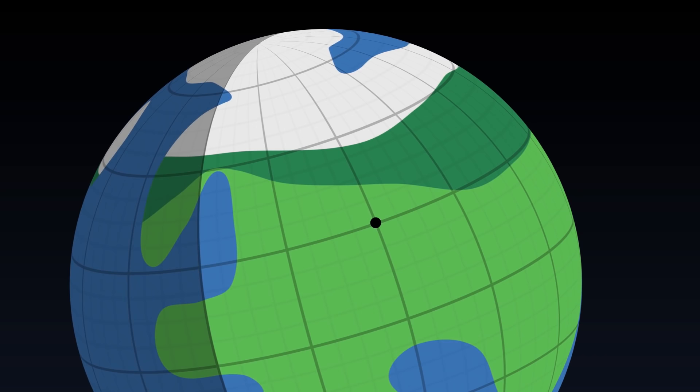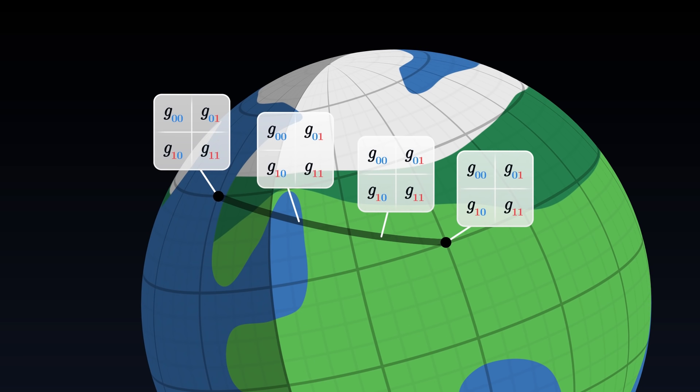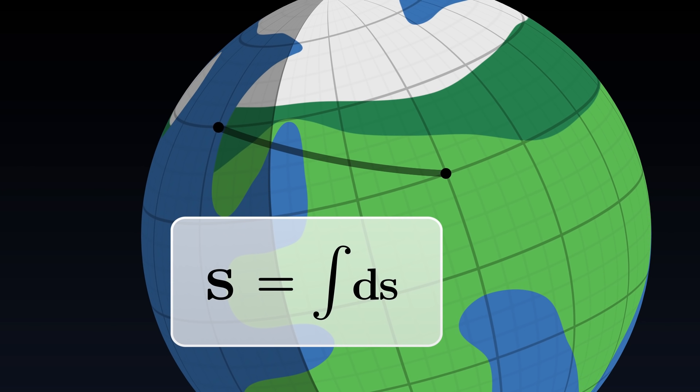That being said, the metric tensor only gives us access to very small distances. If we want to measure a large distance, we have to calculate it all along the trajectory, because the shape of the grid might change from one point to the other. In mathematical terms, this is called an integral, a sum over an infinite number of very small distances.